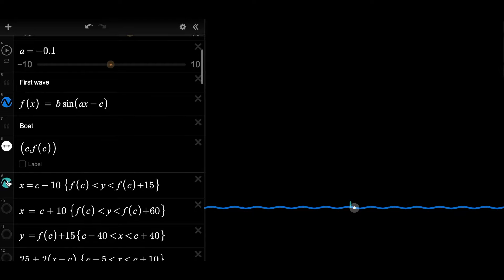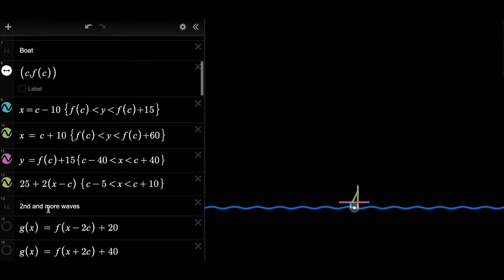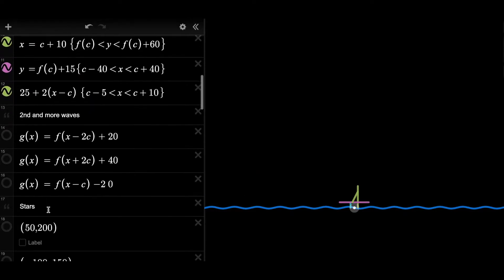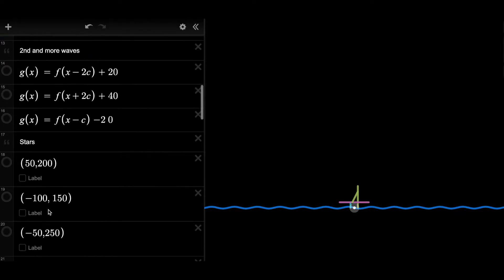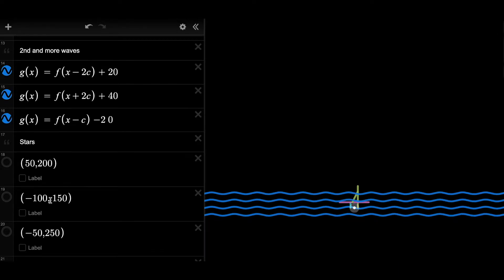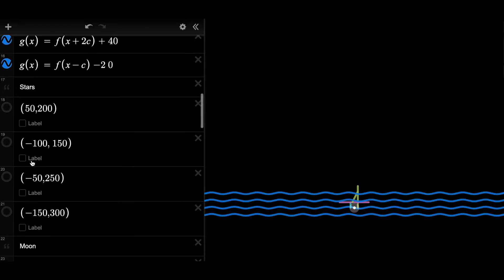And then to create a boat, I just use a bunch of vertical lines, horizontal lines, and slope lines. To create more waves, I use different sine functions, but associated with the first wave.